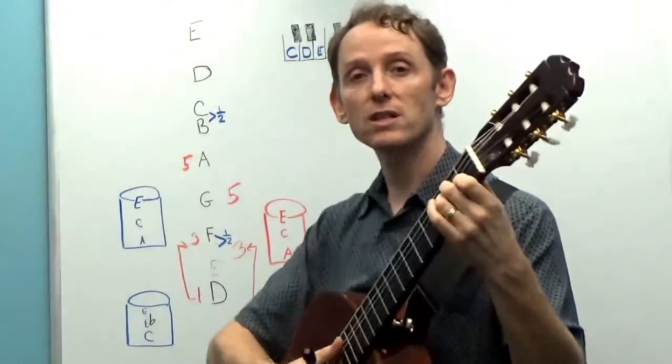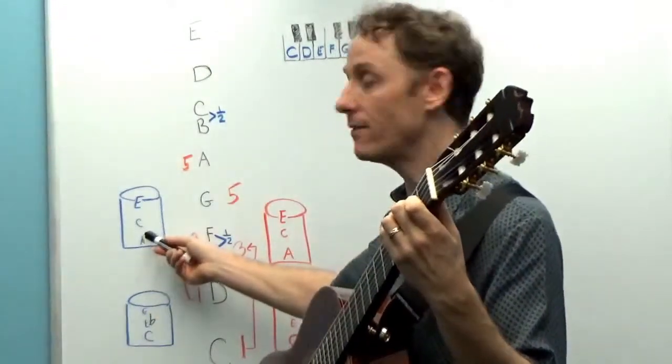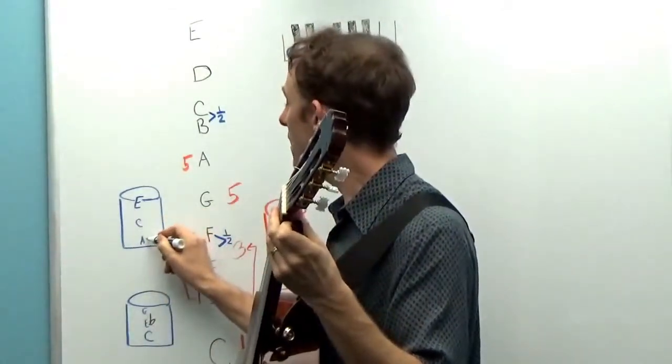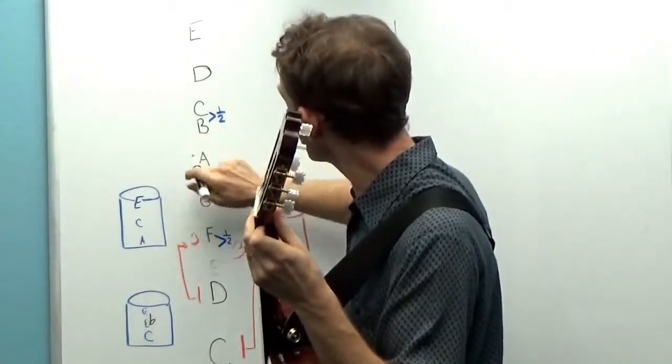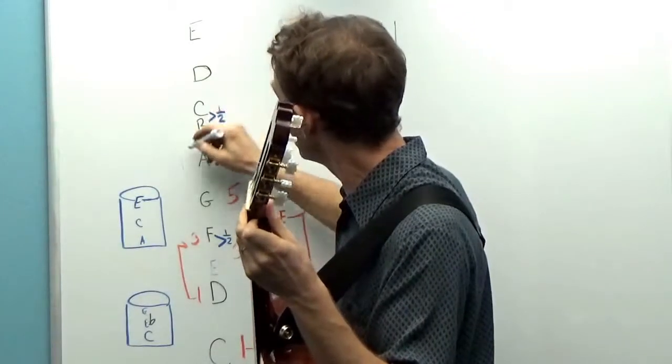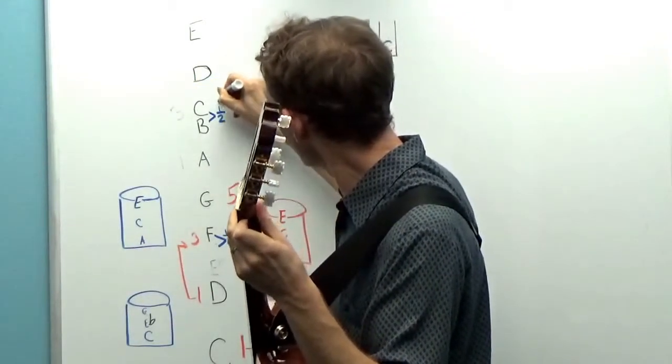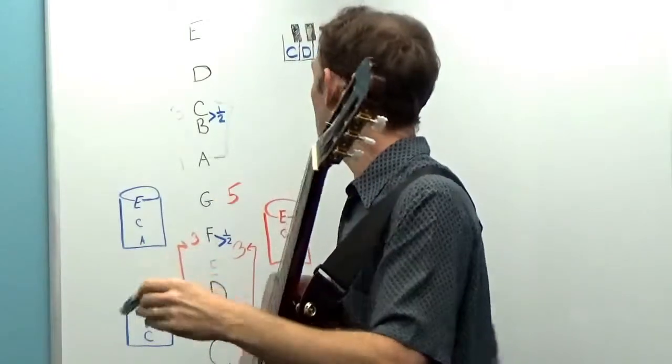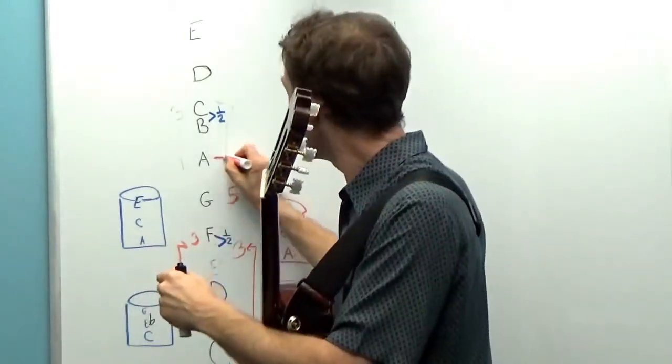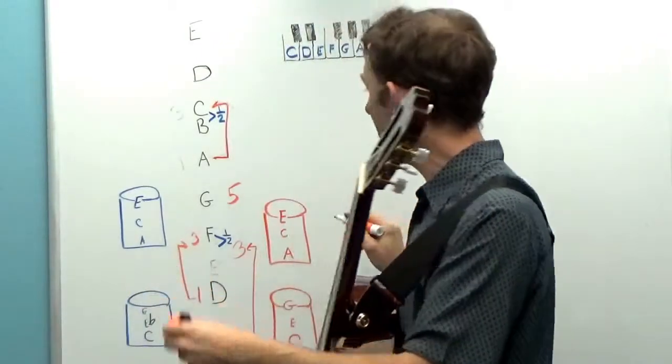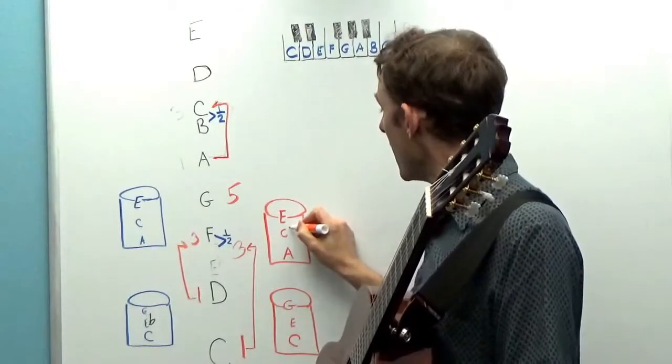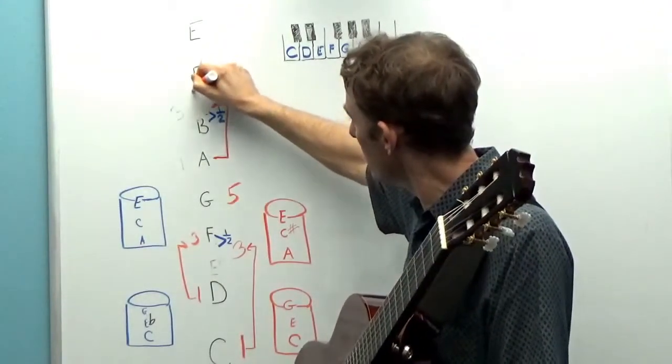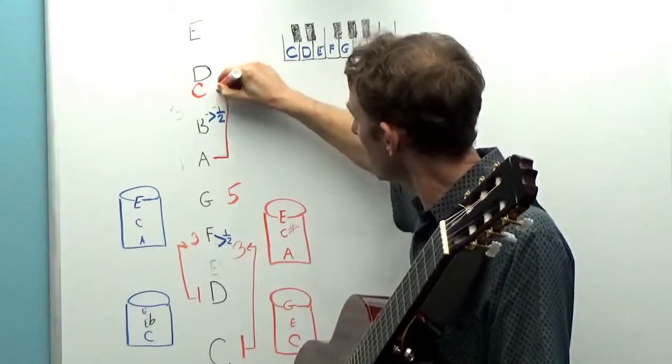Some chords just using natural notes already have a minor third between the first note and the third. For example, A C E, the distance from A, let's call that our root or our one, to C is going to be a minor third. If I want to take a minor third and make it major, I'm going to need to add a sharp: A C sharp E. That way I can raise the note up and make it a big third here.